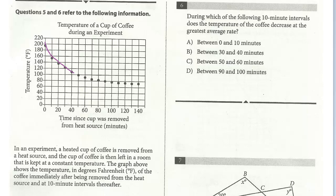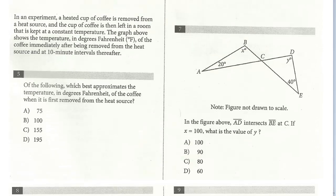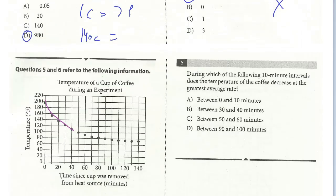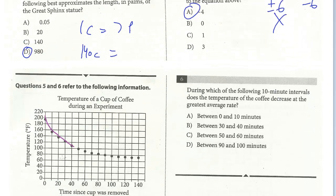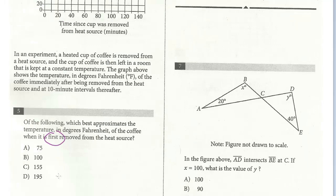Let's look at question 5. Of the following, which approximates the temperature in degrees Fahrenheit of the coffee when it's first removed? 'First removed' means looking at the y-intercept — when time is zero. It looks to be really close to 200, just a little bit below. Looking at the choices, 195 — the answer is D.